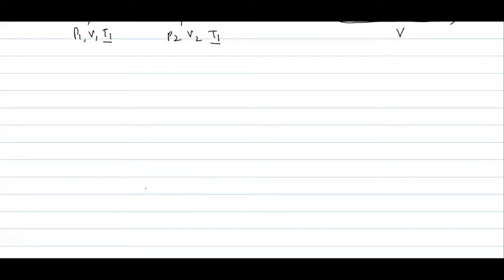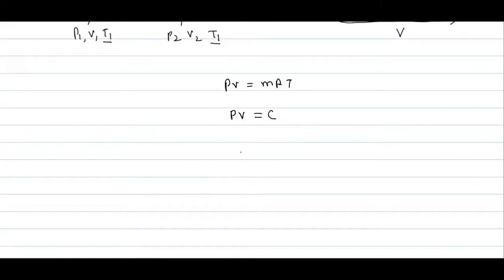There are also isothermal processes in the Carnot cycle and the Stirling cycle. To make a process isothermal, you have to make it very slow — a very slow process allows you to achieve a constant temperature process. In the context of the ideal gas equation, PV = mRT with T constant, so PV equals a constant C. Therefore P equals C divided by V, meaning P is inversely proportional to V, which is Boyle's Law.